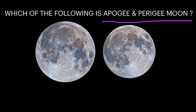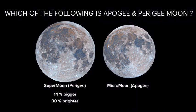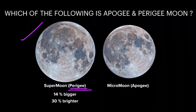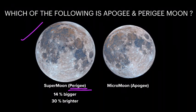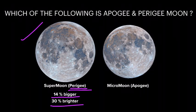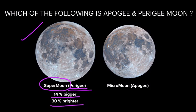The bigger moon is the perigee moon. Perigee means the moon is closer to the earth; things closer to us look bigger. A perigee moon is 14% bigger and 30% brighter than a normal moon — this kind of moon is called a super moon. On the other hand, when the moon is at apogee — the farthest distance — it is called a micro moon.